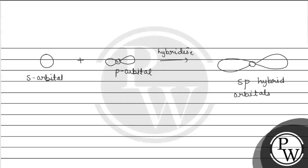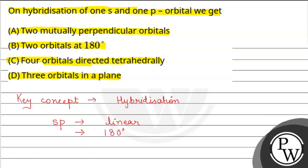We get 2 orbitals at 180 degrees. This is our sp hybridization of 1s and 1p orbital. The correct option is B.